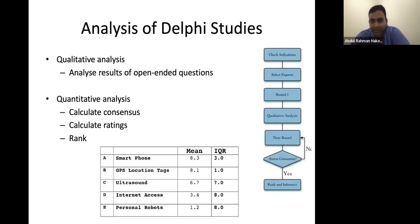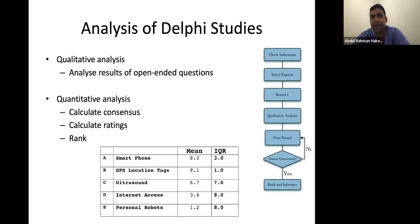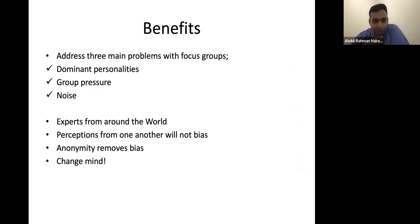Overall in terms of analysis: it's a qualitative analysis for open-ended questions, but you also have quantitative analysis from round two onwards. You calculate consensus and ratings, and can rank responses based on consensus achieved. The interquartile range is most important — you're trying to find out whether experts agree on the topic of the question, not just the wording. You keep going until you reach consensus on all questions, write a report, send it to the experts, make sure they are involved, and then publish the consensus.